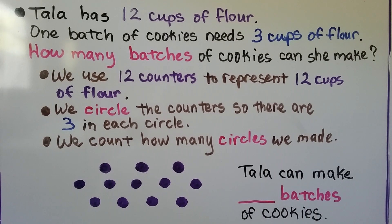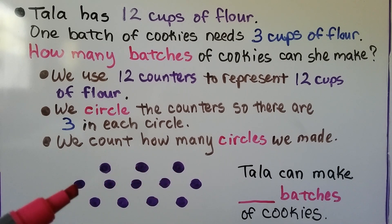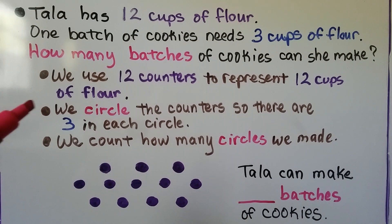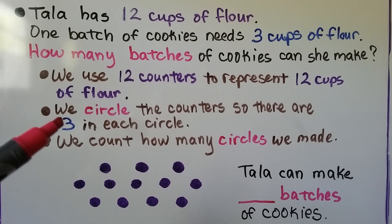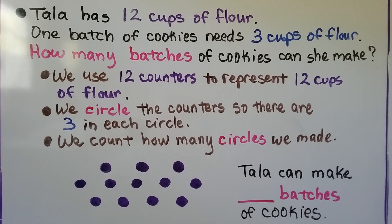Tala has twelve cups of flour, and one batch of cookies needs three cups of flour. How many batches of cookies can she make? We use twelve counters to represent the twelve cups of flour, then circle the counters so there are three in each circle — that stands for one batch. We count the circles: one group of three, two groups of three, three groups of three, four groups of three. We have four groups of three, which means Tala can make four batches of cookies.